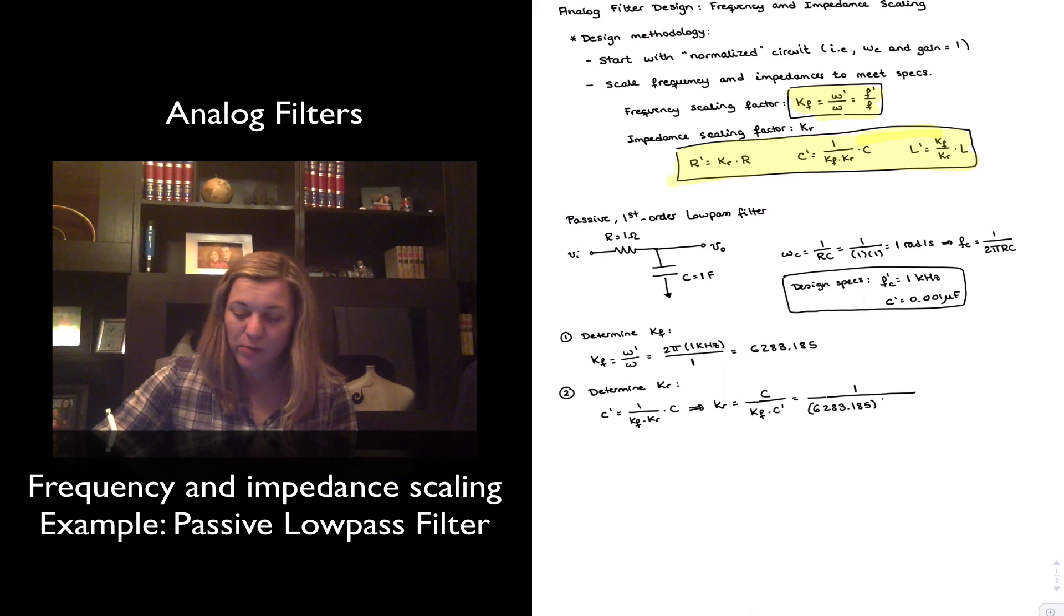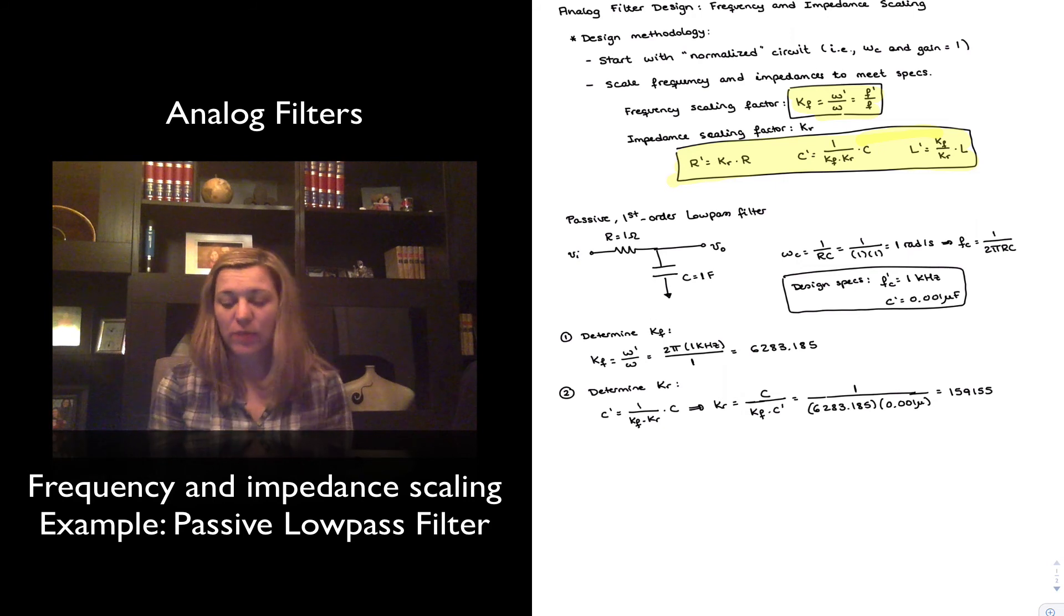Kf I just calculated is my frequency scaling factor is 6,283.185. And my c prime is the capacitor I want to be using in the scaled circuit, and it has value 0.001 micro. So my impedance scaling factor is 159,155.